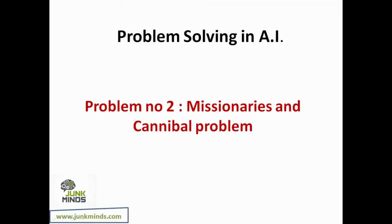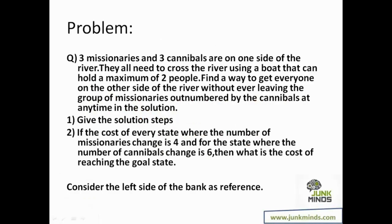Let's move on to the next problem: missionaries and cannibals. Three missionaries and three cannibals are on one side of a river. They all need to cross using a boat that holds a maximum of two people. Find a way to get everyone to the other side without ever leaving missionaries outnumbered by cannibals. Also, if the cost for a state where the number of missionaries changes is four, and where cannibals change is six, what is the total cost of reaching the goal state?